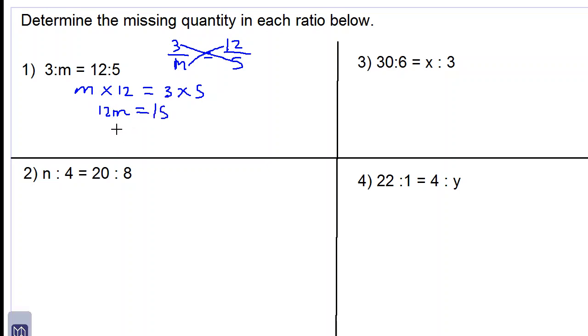We now divide both sides by 12, so we get m is 15 over 12. We simplify this: 3 into 15 is 5, 3 into 12 is 4. m is therefore 5 over 4.